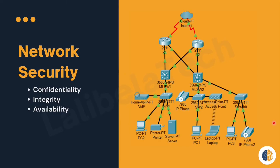The first one is confidentiality. Data confidentiality means that only the intended and authorized recipients can access and read the data. This can be achieved through encryption and decryption, or cryptography in general. The second one is integrity. Data integrity assures users that the information has not been altered during the transmission from origin to destination; integrity will be achieved using hash algorithms. The third one is availability. Data availability assures users of timely and reliable access to data services for only authorized users; availability will be achieved using redundancy.